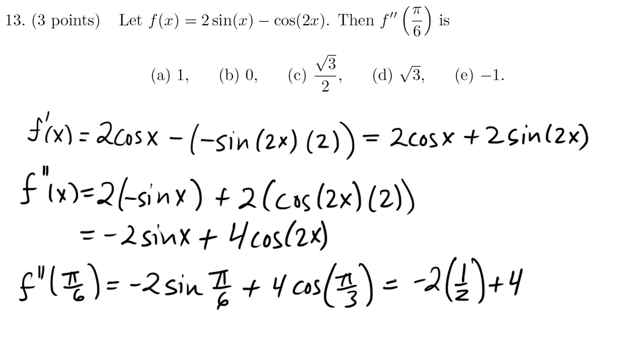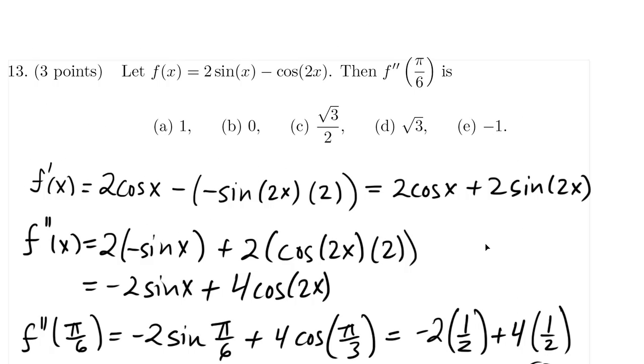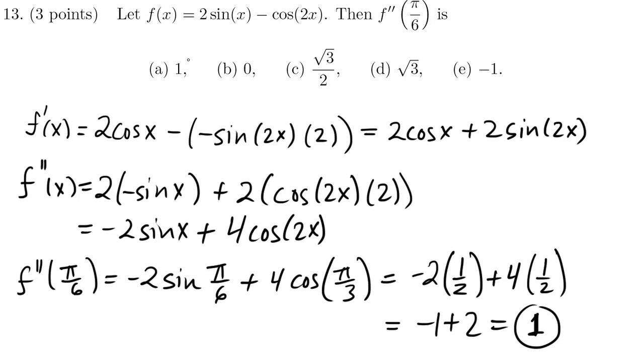And cosine of π over 3 is 180 divided by 3, which is 60 degrees. So cos of π over 3 is the same as cos 60, which is also a half. So there's no roots. This works out very nicely. This is negative 1 plus 2, which is 1. So our answer is 1. And that's answer A.